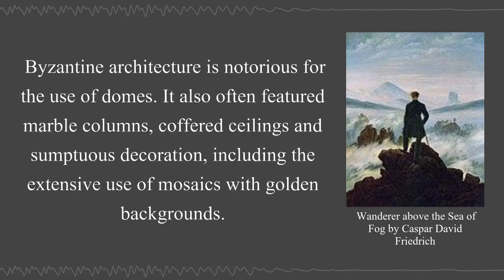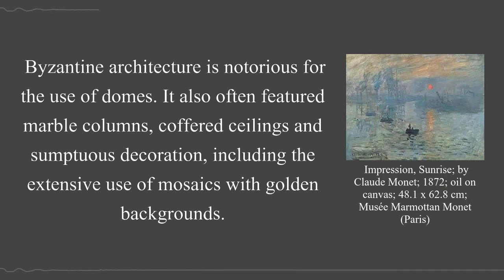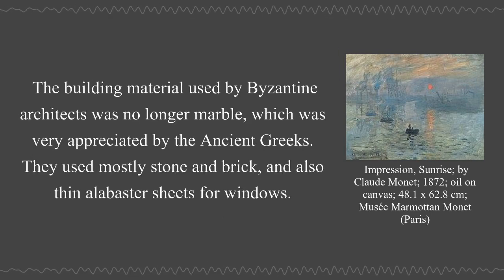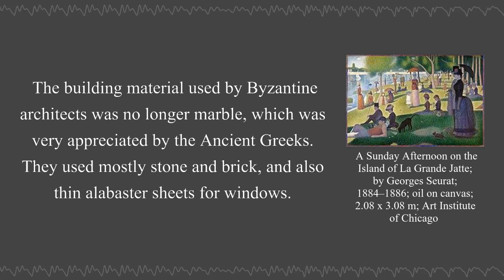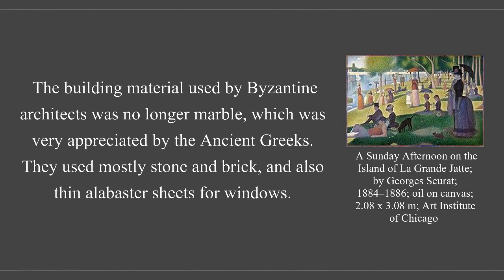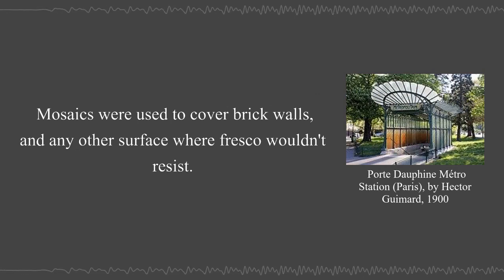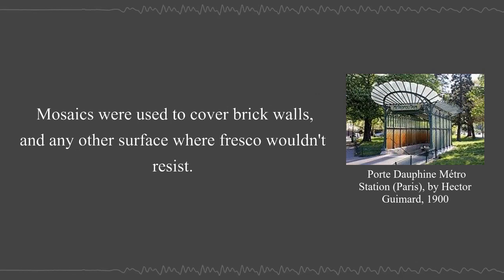Byzantine architecture is notorious for the use of domes. It also often featured marble columns, coffered ceilings, and sumptuous decoration, including the extensive use of mosaics with golden backgrounds. The building material used by Byzantine architects was mostly stone and brick and also thin alabaster sheets for windows. Mosaics were used to cover brick walls and any other surface where fresco wouldn't resist.